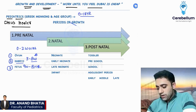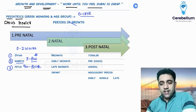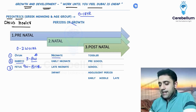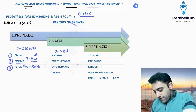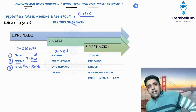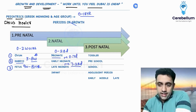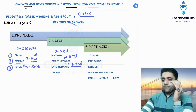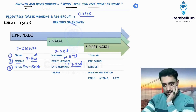Next question: what is a neonate? Zero to 28 days of life is known as a neonate. The neonate is divided into early neonate and late neonate. Zero to seven days of life is the early neonate, and seven to 28 days of life is the late neonatal period.